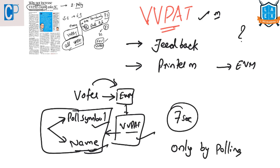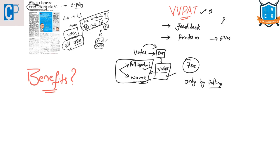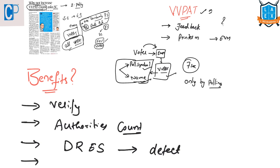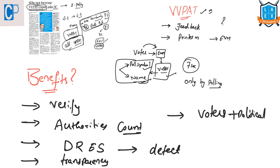The benefits of VVPAT are: it enables the voter to verify whether they have cast their vote for the person of their choice; it allows authorities to count votes manually if there is any dispute in the votes polled through the EVM; it operates under a direct recording election system which can detect fraud and malfunctions; and it ensures greater transparency in the voting process, giving assurance to both voters and political parties.